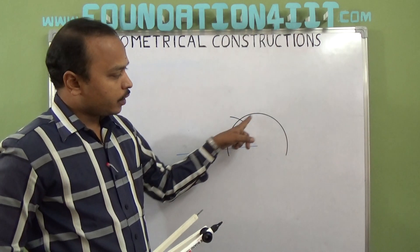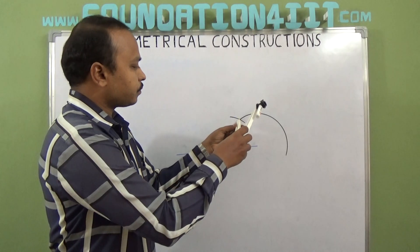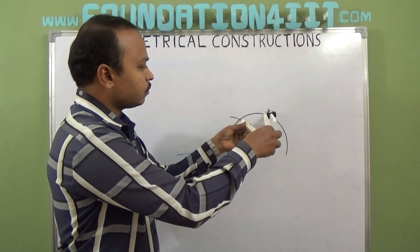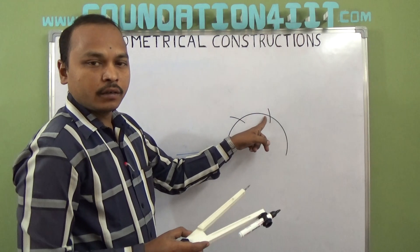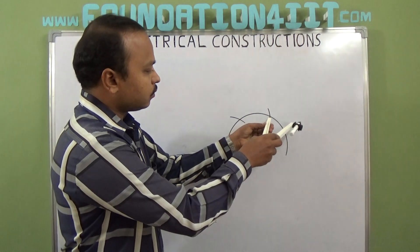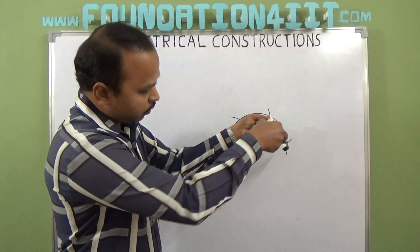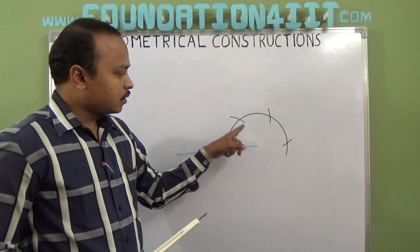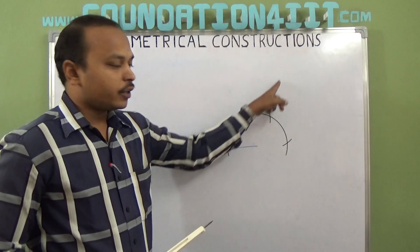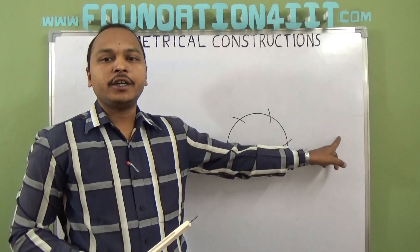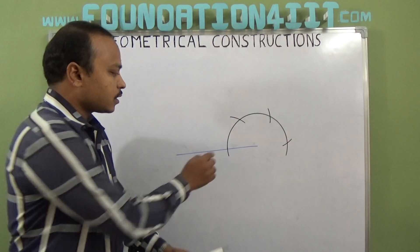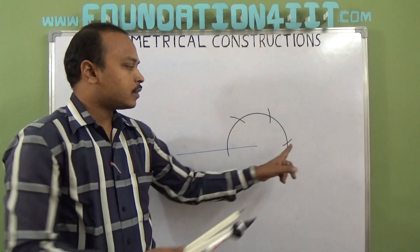Again from this point one more arc, and again from here one more arc. That means this is 60 degrees, and this is 120 degrees, and remaining is 180 degrees. Now this is a zero point and this is 180 degree point.